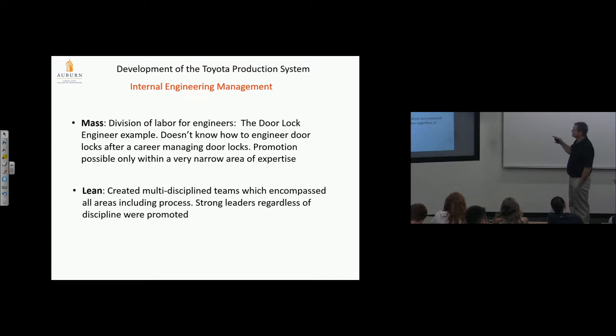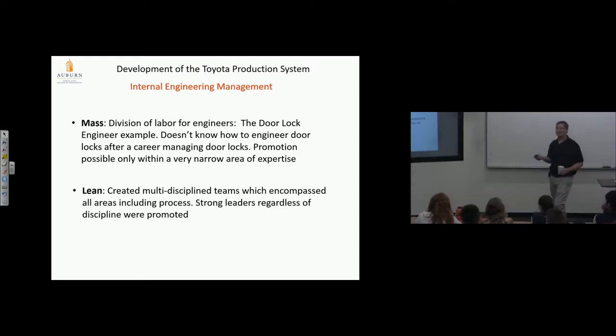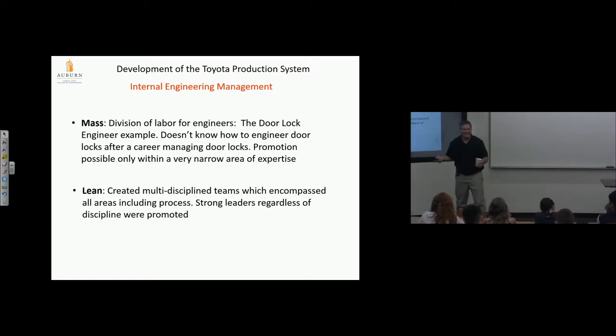Lean created multidiscipline teams which encompassed all areas, including process. Strong leaders, regardless of discipline, were promoted. In other words, they might even let me manage an engineering team and I'm not an engineer at Toyota. Because they'd say, you know, Tom has the right characteristics to make sure things happen. We don't care whether he can engineer it or not. There's a lot of engineers on the team. Let's have him run that team. I think that's why I love them so much. They respect me. I have something to offer.